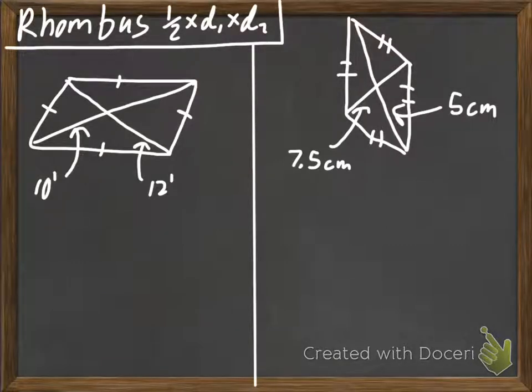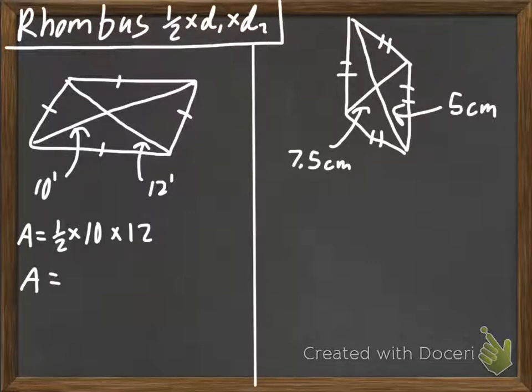So, rhombus area. You find it by doing one half times diagonal one times diagonal two. Now, it doesn't matter which one of your diagonals is diagonal one or diagonal two. It does not matter. So, pick whichever one you want to be diagonal one and diagonal two, and go from there. So, find the area. We're going to do one half times diagonal one. Let's just say it's a ten foot, and then diagonal two will be our twelve footer. We work this out. We figure out that we get it as 60, and it's 60 feet squared. Remember, all of our areas are squared units.